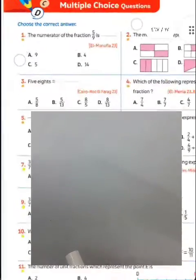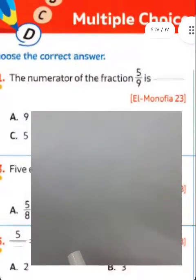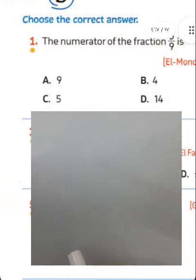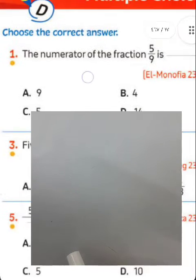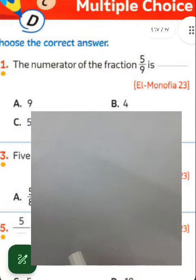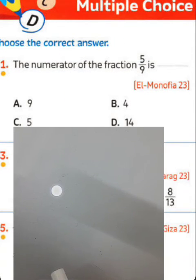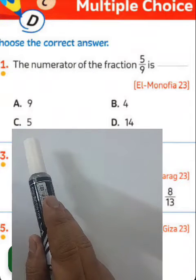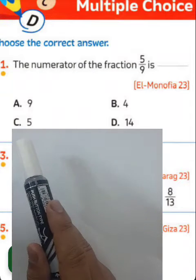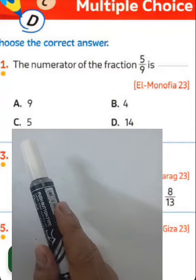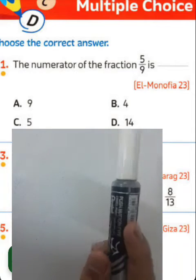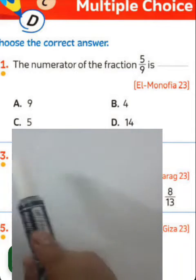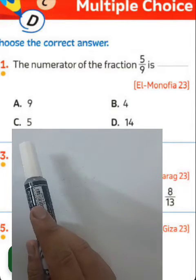The numerator of the fraction 5 over 9 is 5. Here we call it the numerator, and 9 is the denominator. The result here will be letter C. Choose letter C — the numerator of the fraction 5 over 9 is 5.